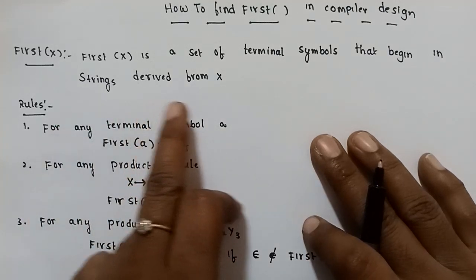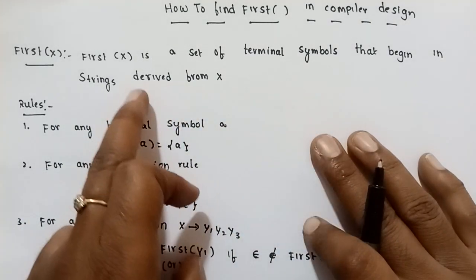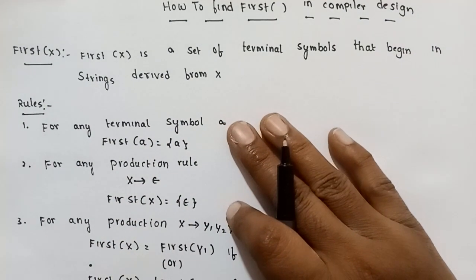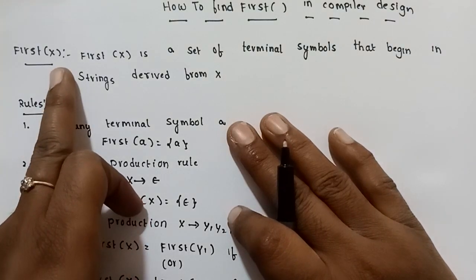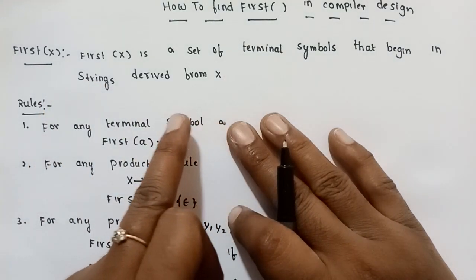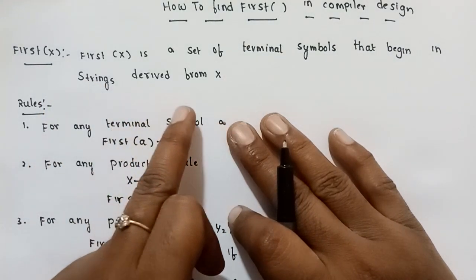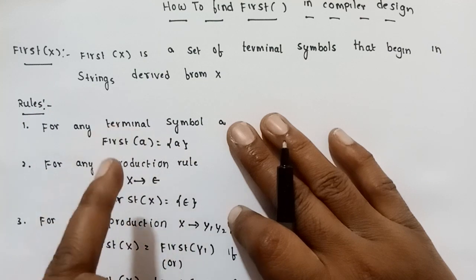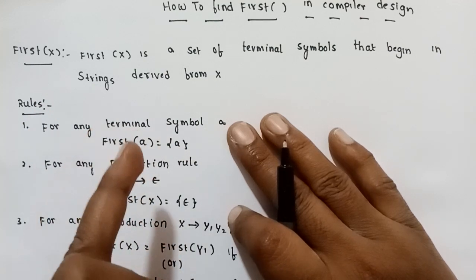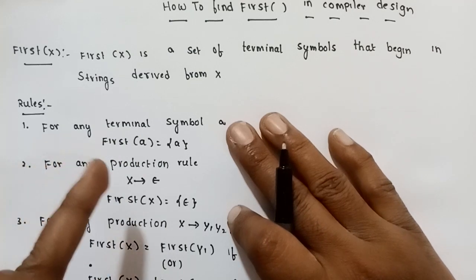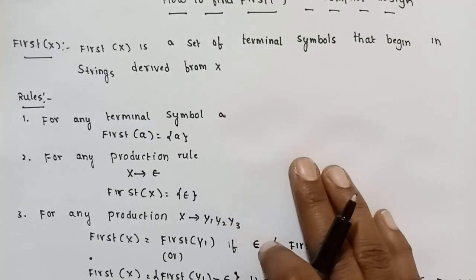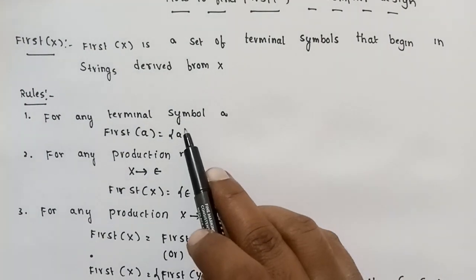First of X is a set of terminal symbols that begin in strings derived from X. So X is a string, and in a production, X is derived from X. This is a terminal symbol. First of X is a rule — First of X is a terminal symbol.